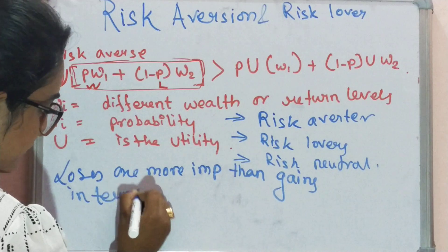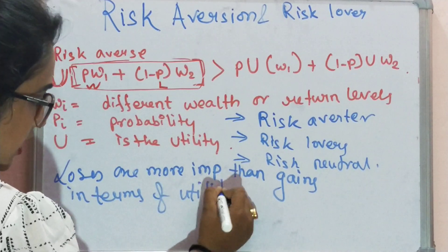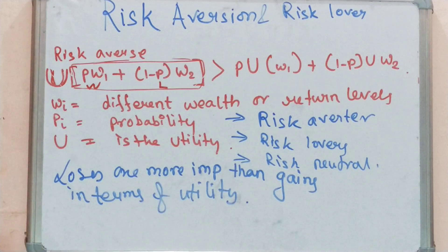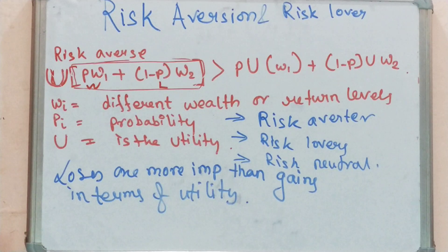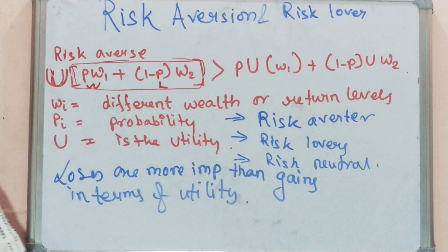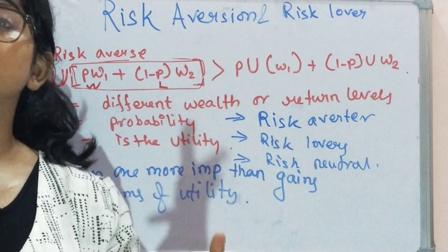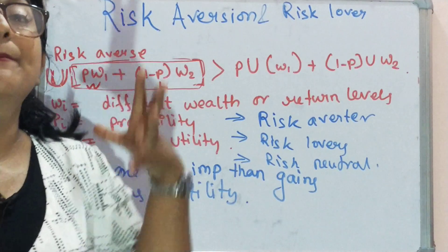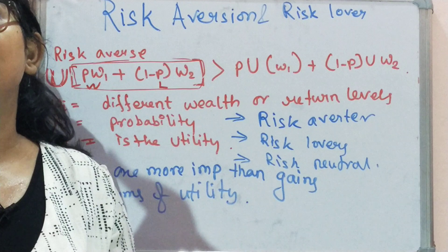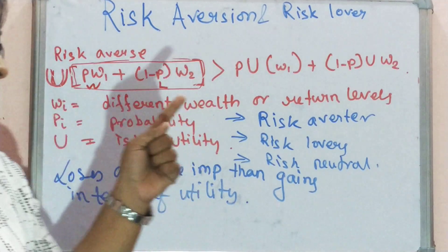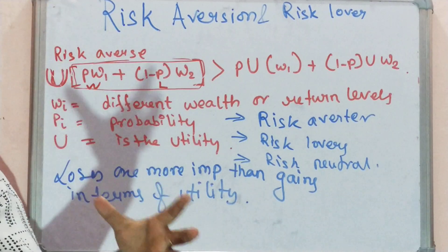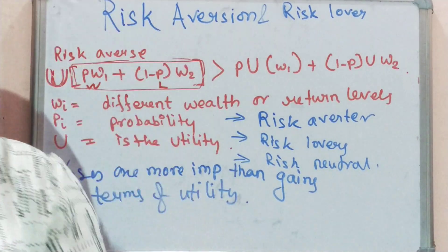This means the marginal utility of return in the bad state is higher than in the good state for any case of contingent consumption. We have diminishing marginal utility, and the attached utility function is concave in the return axis. When I am in a bad state, the marginal utility I get is much more than the marginal utility I get in a good state. This reflects diminishing marginal utility.